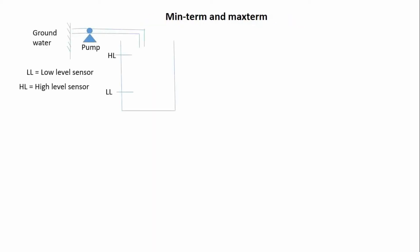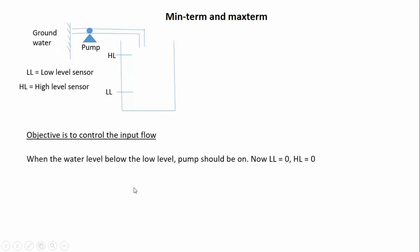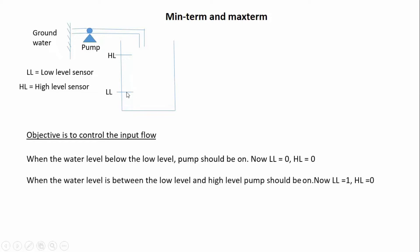Let us take an example: a water tank level control system. My objective is to control the water inflow into the tank. LL is the low level sensor and HL is the high level sensor. This is the ground water supply. My objective is to control the inflow based on the water level. When the water level is below the low level, the pump should be on — meaning LL equals 0 and HL equals 0.